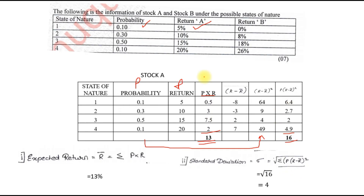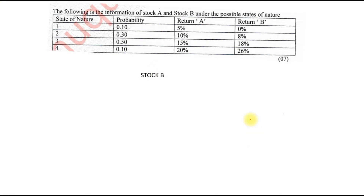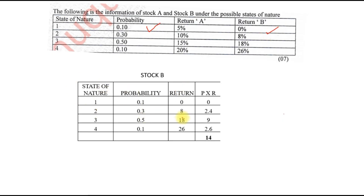Now in the same manner, let us start with Stock B. We take the return of B along with the probability in the same column order: state of nature, probability, return, and P×R. So 0.1×0, 0.3×8, 0.5×18, and 0.1×26. We multiply and get the total as 14. So the expected return ΣP×R for Stock B is 14%.